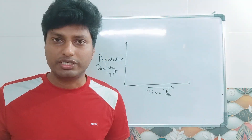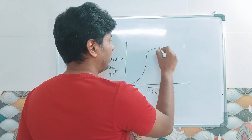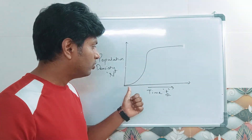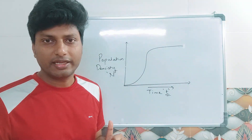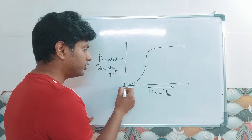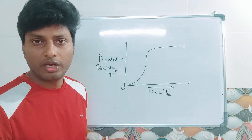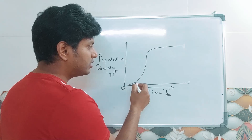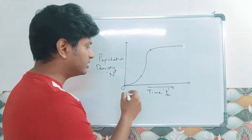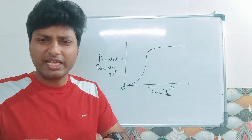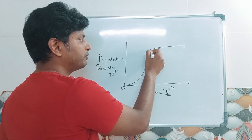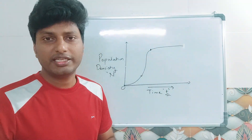Looking at this graph, it has a sigmoid shape. At one point the population density is zero, but with respect to time the population increases and becomes stable. The population first grows steadily, then grows very rapidly, and continues until a certain point.